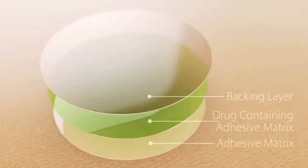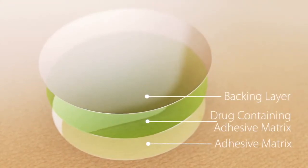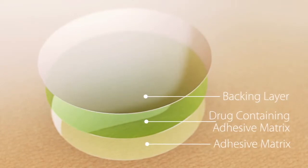The basic components of the transdermal patch are an outer backing film of plastic or foil and a pressure sensitive adhesive that anchors the patch to the skin.